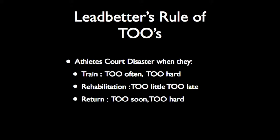Dr. Ledbetter was an orthopedic surgeon who wrote articles on running injuries and came up with this rule of twos — not T-W-O, but T-O-O. Athletes court disaster when they train too often, too hard. And in their rehabilitation, they do too little and too late. Finally, after a return to running, they go back too soon and with too much intensity.